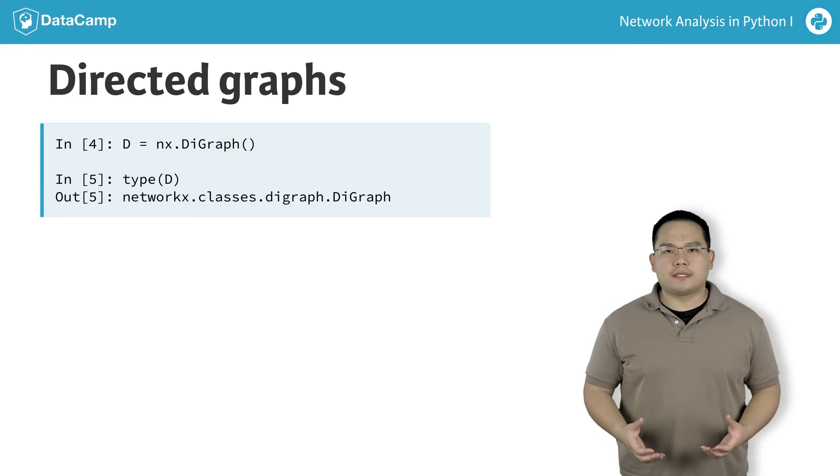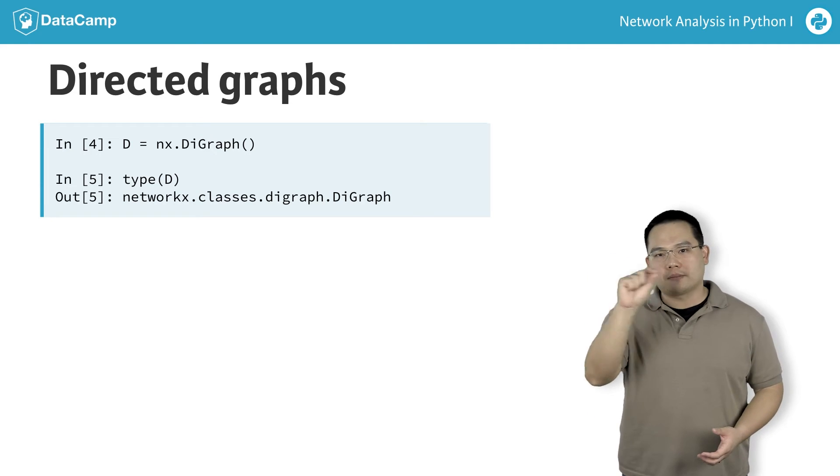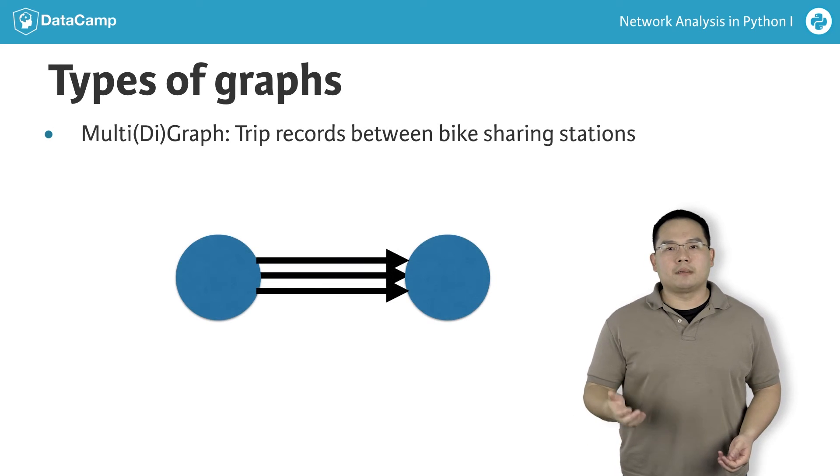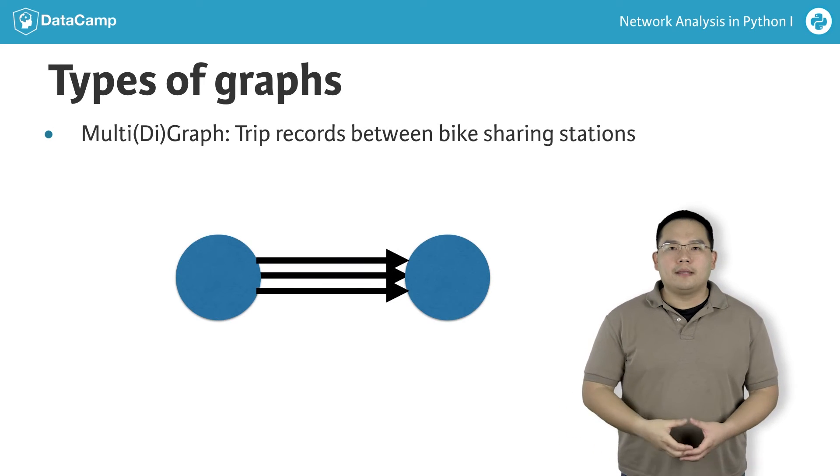We can also have graphs in which there are multiple edges permitted between the nodes. For example, we may want to model trips between bike-sharing stations. Each trip may be one edge between the pair of stations.